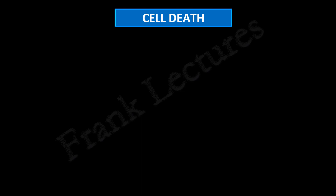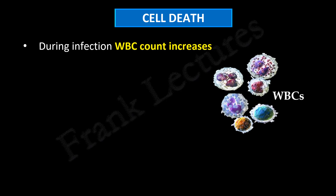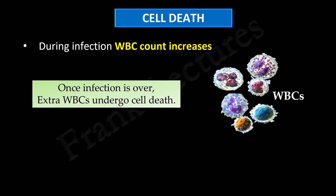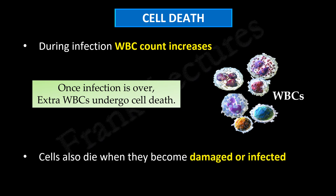Let's look at one more example. We all come across infection in our lives, and we know that during infection the white blood cell count increases. But when the infection is over or cured, what happens to the extra white blood cells in the body? These extra white blood cells also undergo cell death. Besides these examples, cells also die when they become damaged or infected. This is important because, if not removed, such cells can be a threat to the health of the organism.